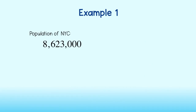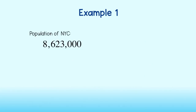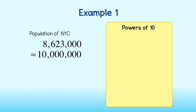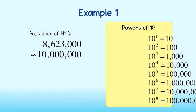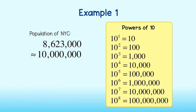For example, let's bring back the population of New York City. We can round up to the nearest power of 10, or 10 million. Remember, a power of 10 is just 10 to some power. Here are some examples. Notice that the power corresponds to the number of zeros in the number.